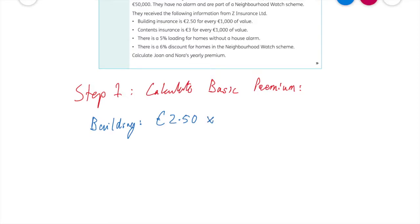So that means I need to multiply my £2.50 by 250 because £250,000, if that makes sense. So £2.50 by 250, well put that into your calculator and I'm going to get a total there of £625.